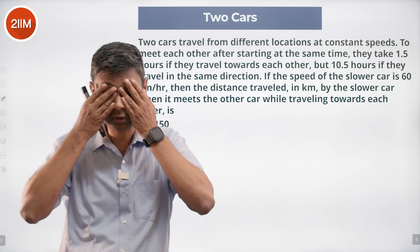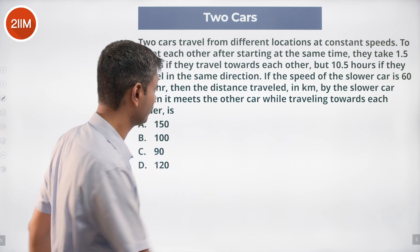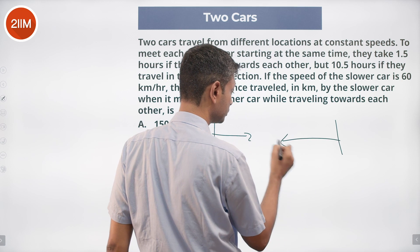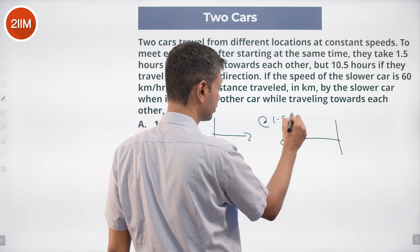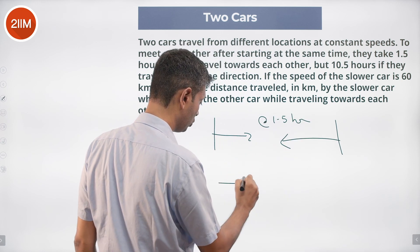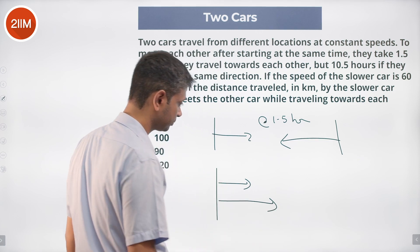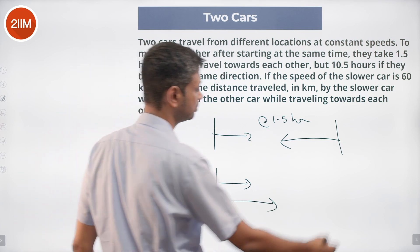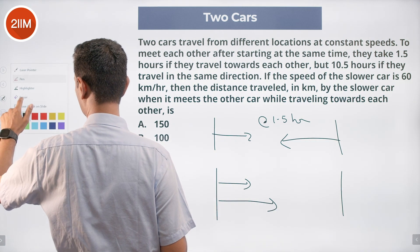So the question says if they move towards each other they take 1.5 hours. They move in the opposite direction... what is this? Starting from... sorry, just erase this, make it super clear.